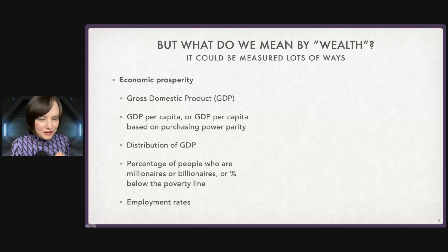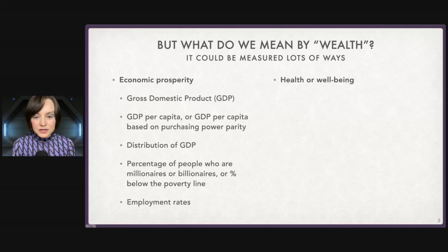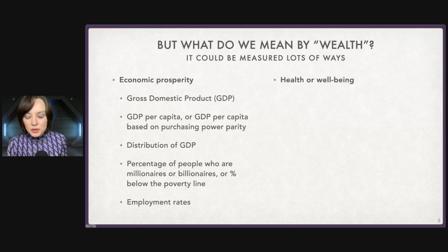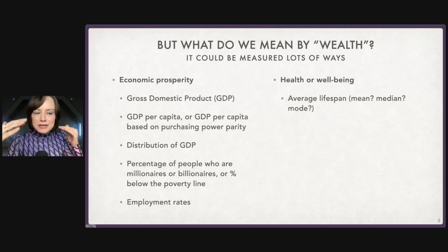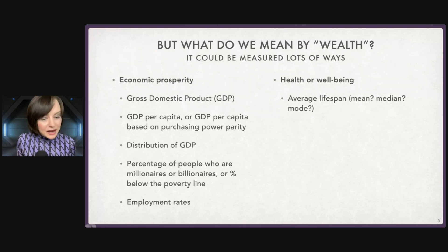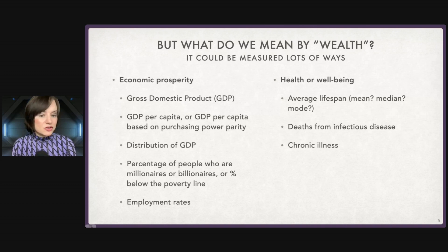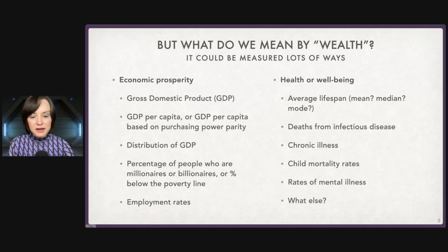All of these tap into different areas, so anytime we use one dataset we are necessarily leaving out some others. Maybe we care about wealth because of what it gets us — something like health or wellbeing. Maybe when I ask what makes a country wealthier, I mean in terms of happiness or health: the mean lifespan, the median lifespan. Maybe I want to measure decreases in deaths from infectious disease, incidences of chronic illness, child mortality rates, mental health, and so on. There are tons of different ways to measure this idea of wealth.